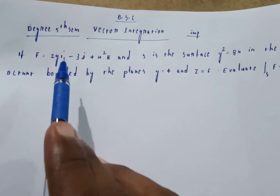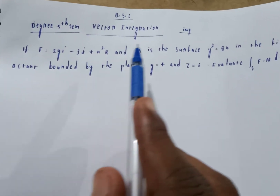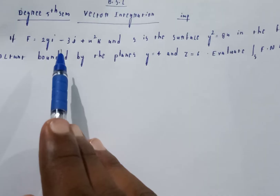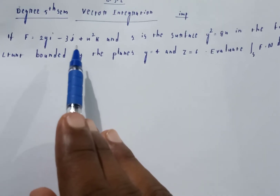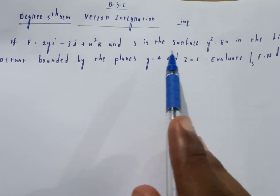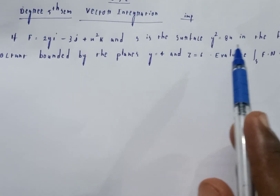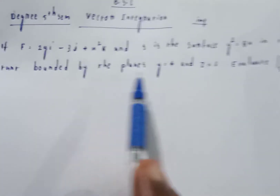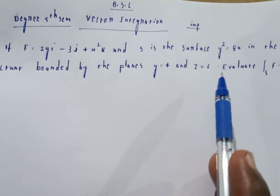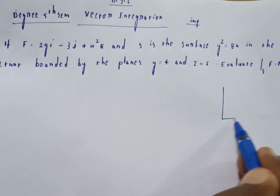Welcome to my channel. BSc degree, vector surface integration problem. If f is equal to 2y i minus 3j plus x square k, and s is the surface y square equal to 8x in the first octant, bounded by the planes y is equal to 4 and z equal to 6.